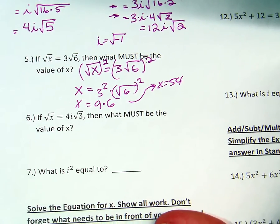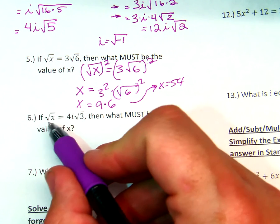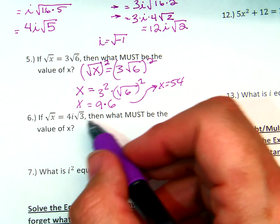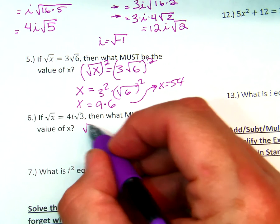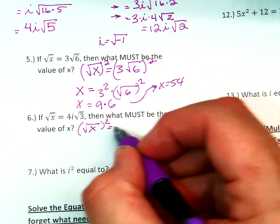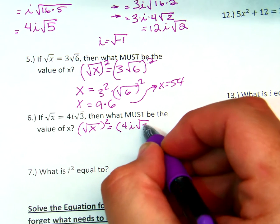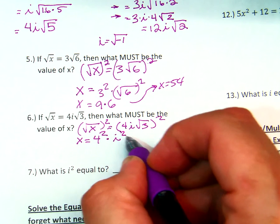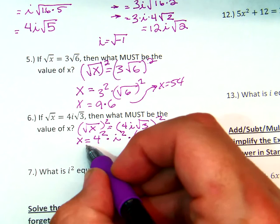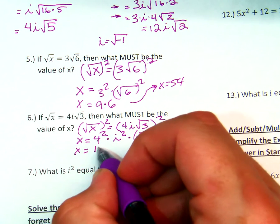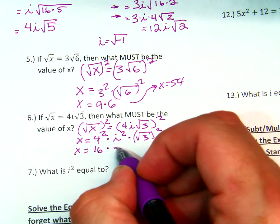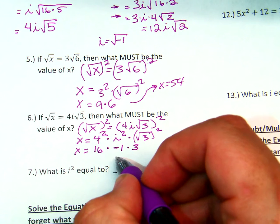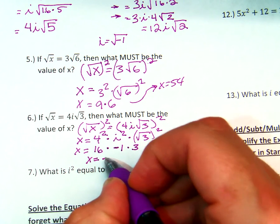Same thing with this one — we have an i in there. So what should we expect x to be? Negative. When you see i, that usually tells us there was a negative square root. So we take the square root of x and square that side, equal to 4i times the square root of 3, squared. We get x equal to 4 squared times i squared times the square root of 3 quantity squared. So x equals 16 times i squared, which is negative 1, times 3. So x is equal to negative 3 times 16, which is negative 48.